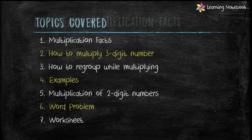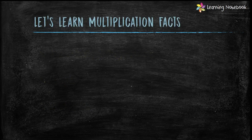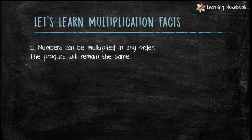Let's start the chapter by learning some multiplication facts. The first fact is: numbers can be multiplied in any order, and the product will remain the same. For example, whether we do 4 into 9 or change the order to 9 into 4, the product will remain the same, i.e., 36.